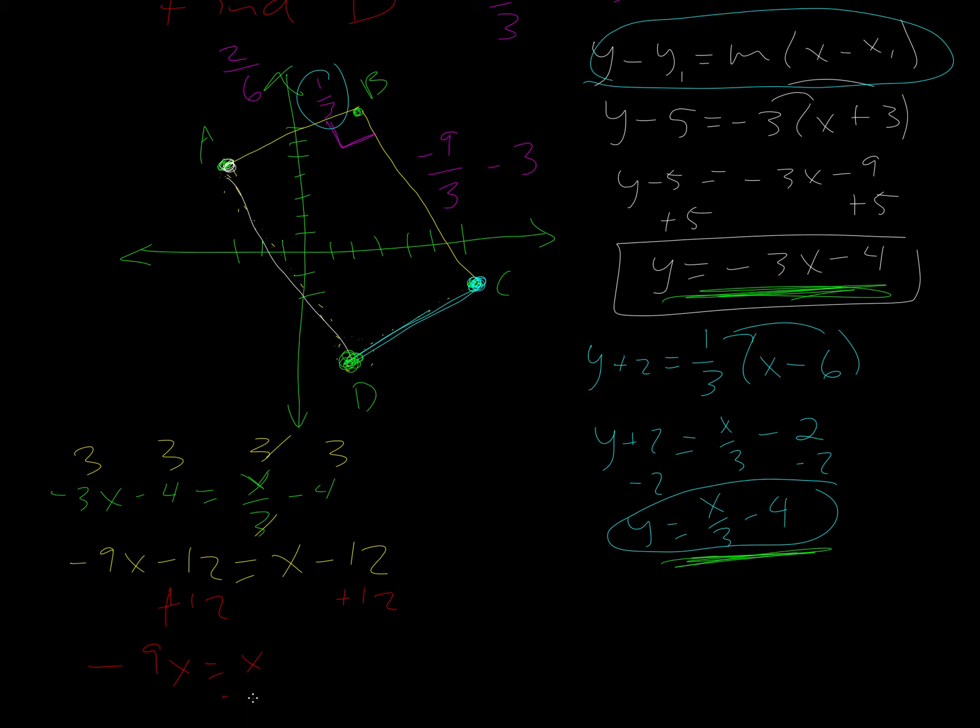And I get negative nine X equals X. And then I'm going to subtract X, subtract X, and that gives me negative ten X equals zero. Divide by negative ten, divide by negative ten, and so X equals zero. So the X coordinate of D is equal to zero.